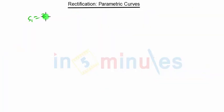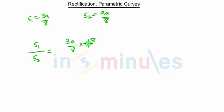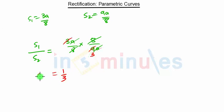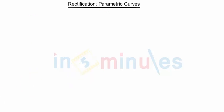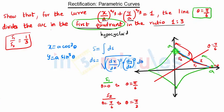Now we find the ratio S1/S2. S1 is 3a/8 and S2 is 9a/8. Taking the ratio: (3a/8) / (9a/8) = 3a/8 × 8/9a. The 8s and a cancel, leaving 3/9 = 1/3. Therefore S1/S2 = 1/3, meaning the line θ = π/6 divides the curve in the first quadrant in the ratio 1:3. More such problems will be covered in the next video.